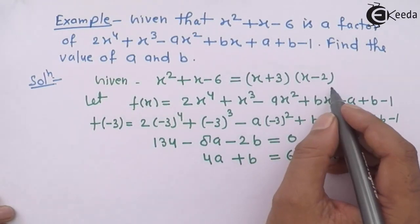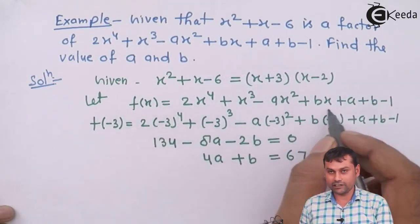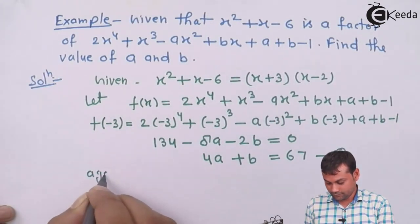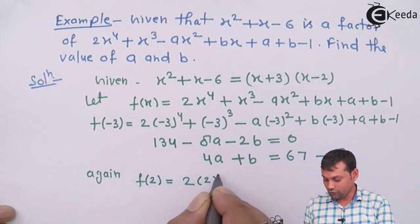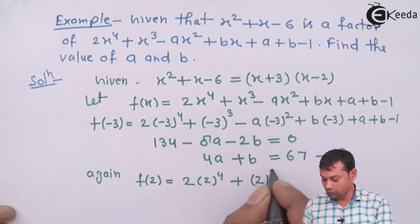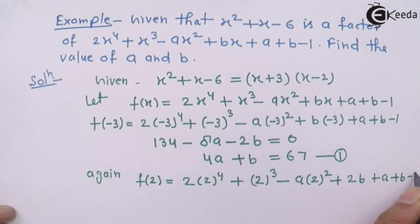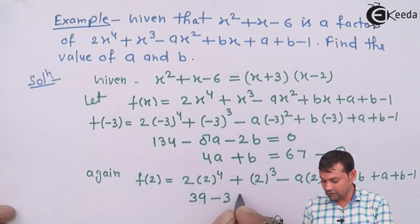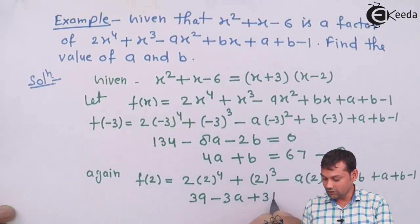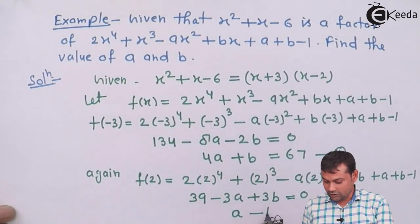This we consider equation number 1. Again we have second linear factor x-2. Compare with linear factor x-k, we get k value 2. That value we will put back in this expression. So again f(2) equals to 2(2⁴) + 2³ - a(2²) + 2b + a + b - 1. After solving, we get 39 - 3a + 3b equals to 0. And if we simplify, we get a - b equals to 13.